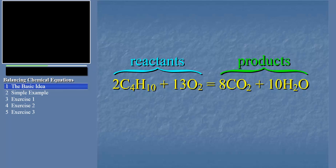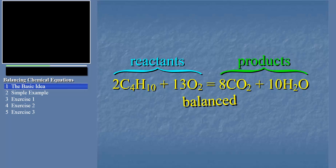So, in practical terms, what does it mean when we say the reaction is balanced? A chemical reaction is balanced when there are the same number of atoms of each element on both sides of the equation.